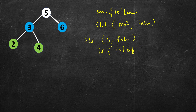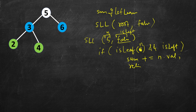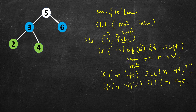The leaf check is: node.left is null and node.right is null. So if the node is a leaf and the boolean parameter 'isLeft' is true, we do sum += node.value and return. If the node is not a leaf, we recursively call sll for the left child passing true, and for the right child passing false.